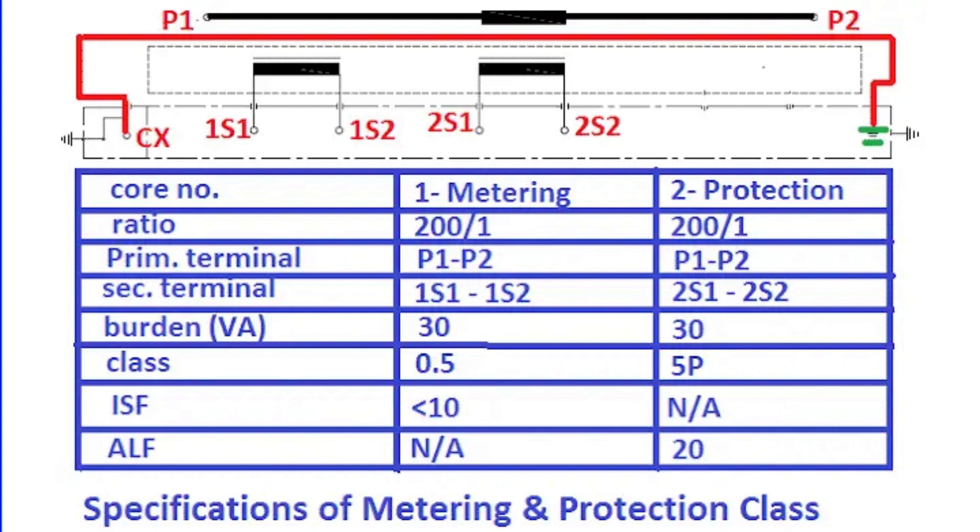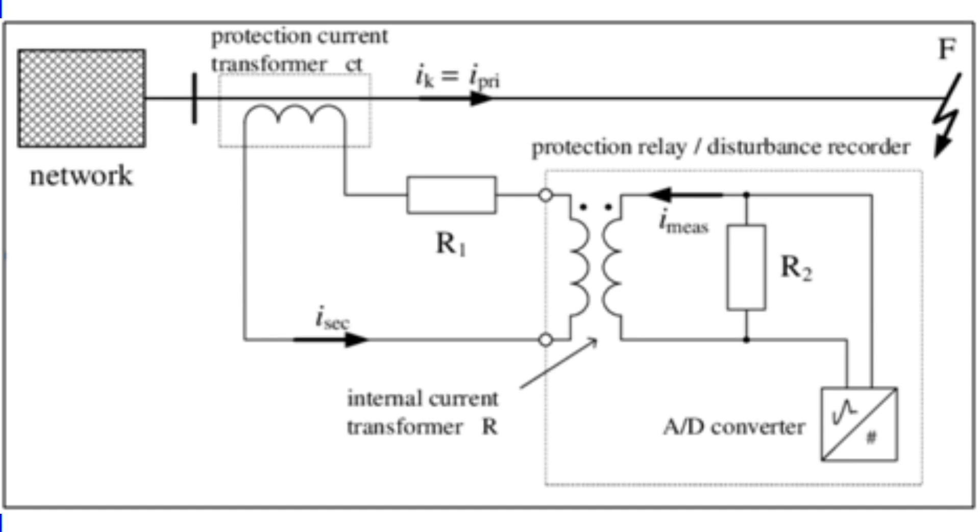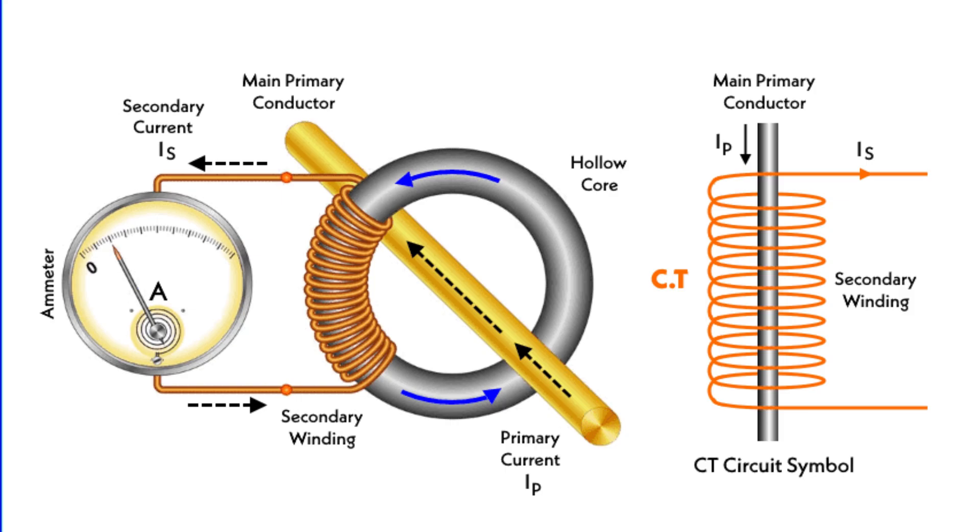However, if a metering CT is used for protection purposes, the core will saturate during fault conditions, distorting the secondary current. This could cause the relay to malfunction, jeopardizing the power system stability. In simple terms, metering CTs are designed to protect meters, not to handle the critical demands of relays during faults.